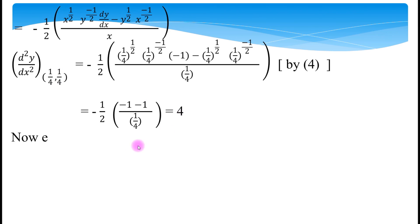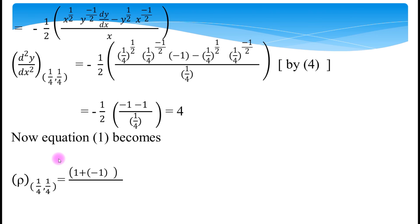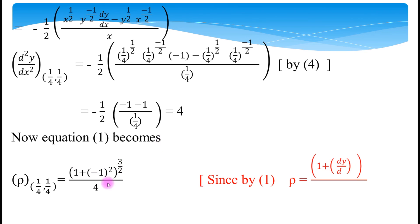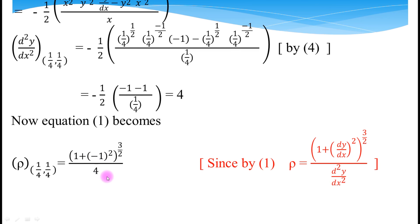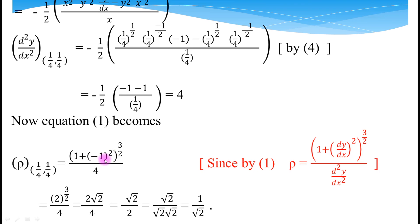Now find ρ at the point (1/4, 1/4) by substituting into equation number 1. Substituting dy/dx = -1 and d²y/dx² = 4: ρ = (1 + (-1)²)^(3/2) / 4. The numerator becomes (1 + 1)^(3/2) = 2^(3/2), divided by 4.